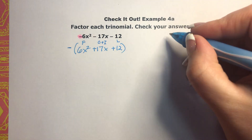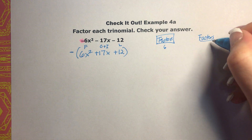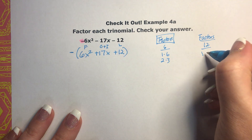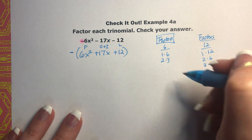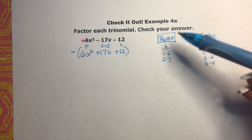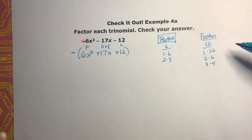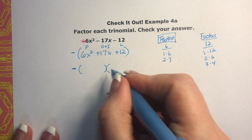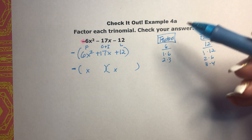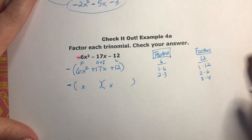So I'm looking at the factors of 6 and the factors of 12. Factors of 6: 1 times 6, 2 times 3. Factors of 12: 1 times 12, 2 times 6, 3 times 4. Wow, so there's a lot going on here. I know that I'm going to have to figure out which combination to use. I can write in x and x and know I'll need a number in front of both.